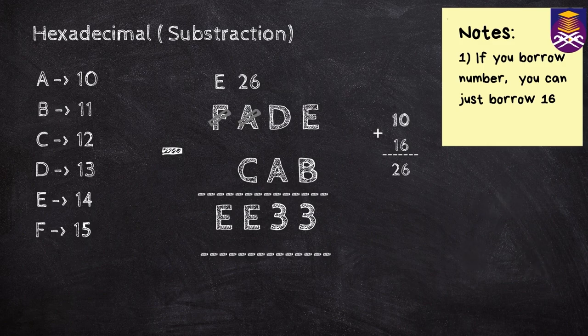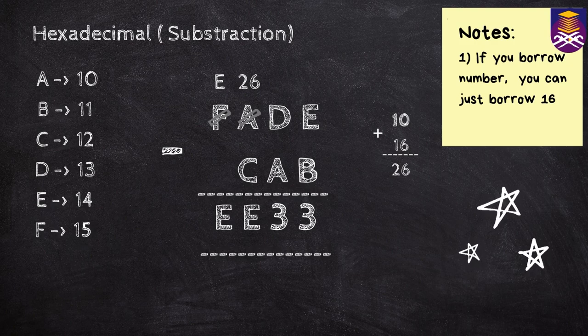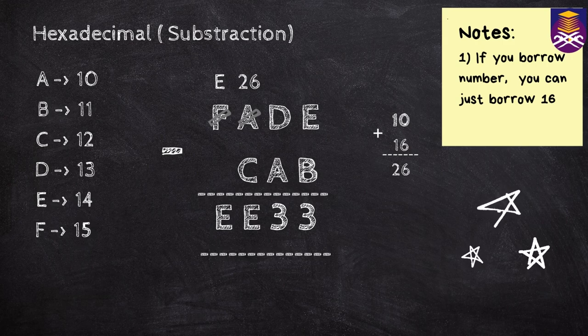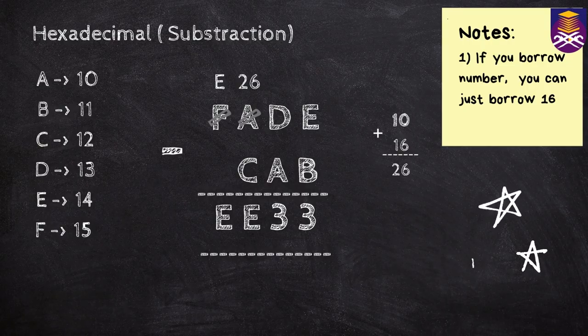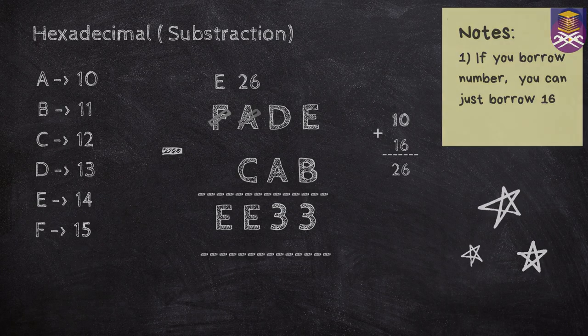Then there is hexadecimal subtraction. You must remember that if you borrow a number, you can just borrow 16. Just as the example, A minus C. So you have to borrow a number from F and it will be 10 plus 16 and it's 26 minus 12.